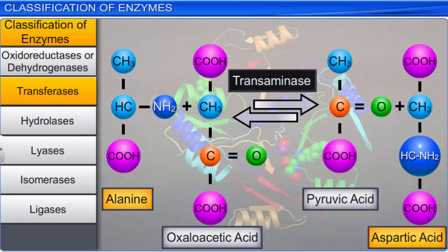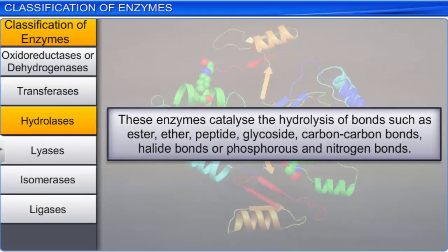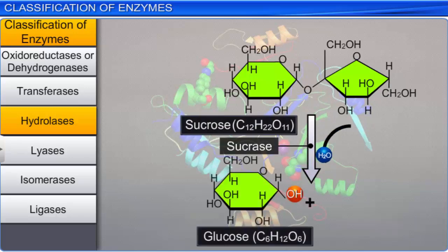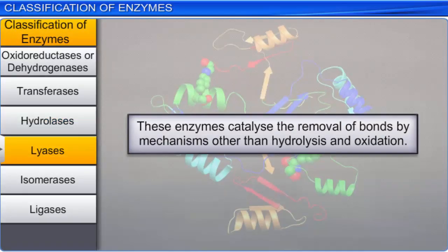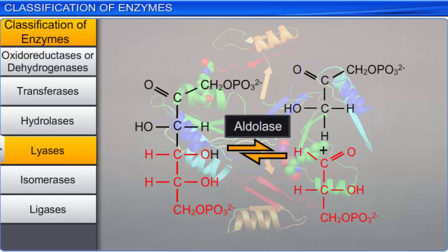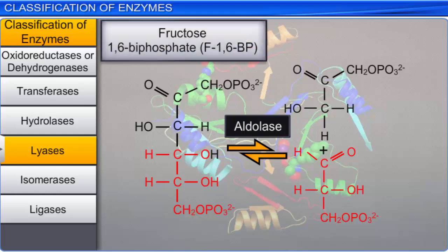The third class of enzymes, hydrolases, catalyzes the hydrolysis of bonds such as ester, ether, peptide, glycoside, carbon-carbon bonds, halide bonds, or phosphorus and nitrogen bonds. For example, the hydrolysis of glycosidic bonds in sucrose by sucrase leads to the formation of glucose and fructose. Lyases comprise the fourth class — they catalyze the removal of bonds by mechanisms other than hydrolysis and oxidation, using mechanisms such as forming double bonds or a new ring structure. An example is aldolase, which cleaves the aldol groups in fructose 1,6-bisphosphate and forms dihydroxyacetone phosphate and glyceraldehyde 3-phosphate.